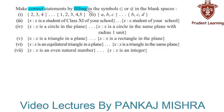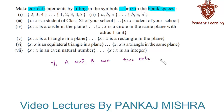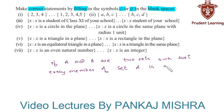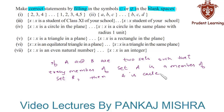We need to make correct statements by filling in the symbols 'subset' or 'not a subset' in the blank spaces. Before jumping to the solution, let us recall the definition of a subset. If A and B are two sets such that every member of set A is also a member of set B, then A is called a subset of B. Keeping this definition in mind, let us solve each section one by one.